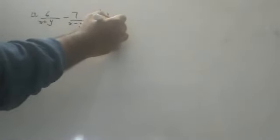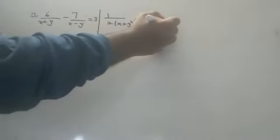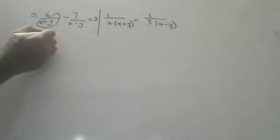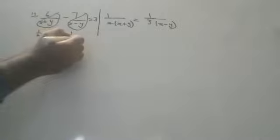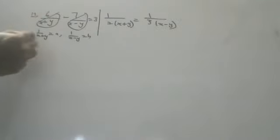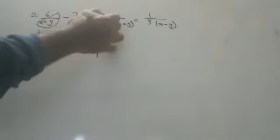Question 17 — please concentrate, this is very important and also quite easy, but the method is a little more elaborate. The equation is: 6/(x+y) minus 7/(x-y) = 3. The second equation is: 1/(2(x+y)) = 1/(3(x-y)). Here we take 1/(x+y) as 'a' and 1/(x-y) as 'b'. The first equation then becomes 6a minus 7b = 3.